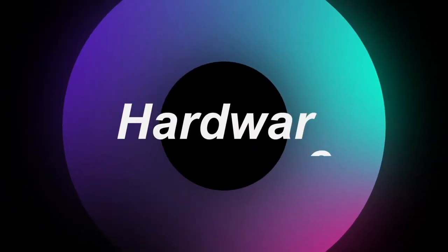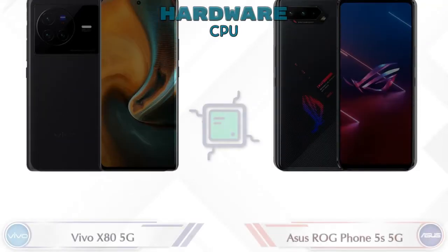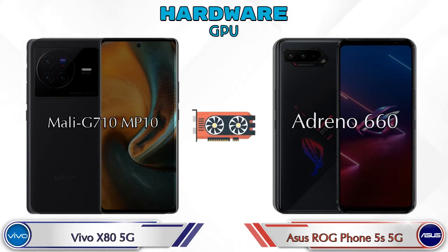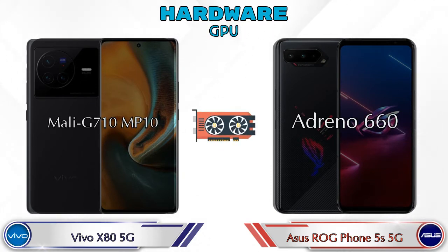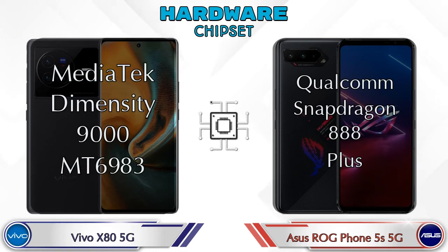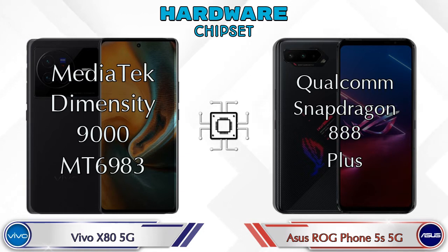First, let's talk about the most important part of the phone — hardware. For the GPU, the Vivo X85G has Mali G710 MP10 and the ROG Phone 5S 5G has Adreno 660. For the chipset, the Vivo X85G features the MediaTek Dimensity 9000 MT6983, while the ROG Phone 5S 5G uses the Qualcomm Snapdragon 888 Plus.